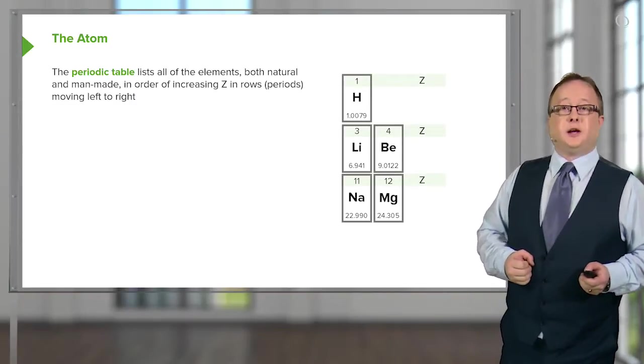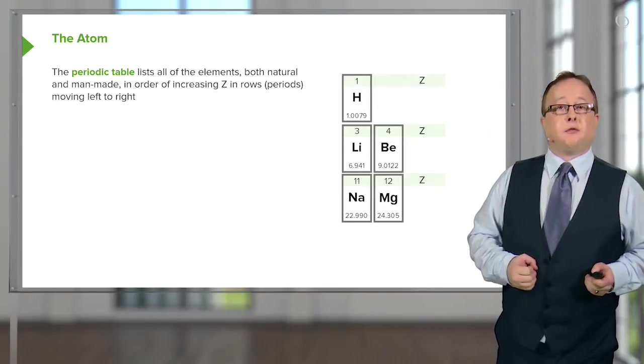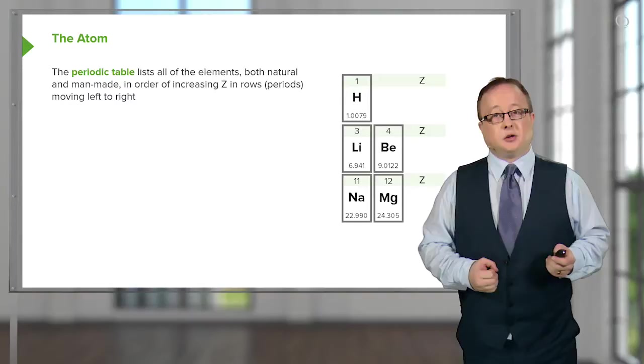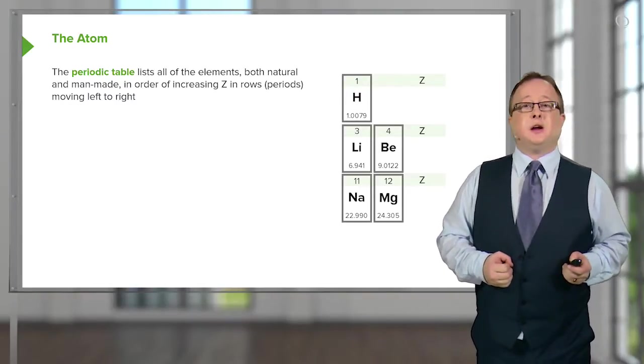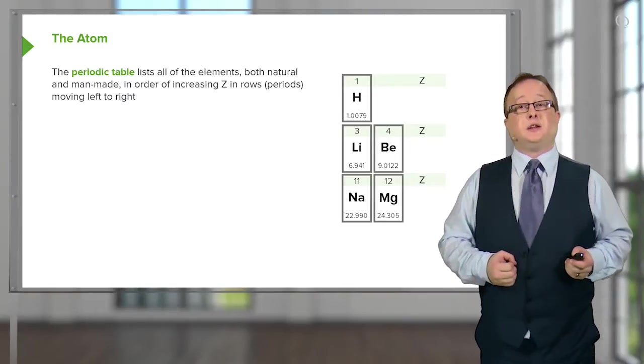Now, as you can see in the periodic table, you can observe we've got a number of different numbers above and beneath the chemical symbols. If we look at the number above, it is the smallest number, and therefore it is the Z number, or atomic number.